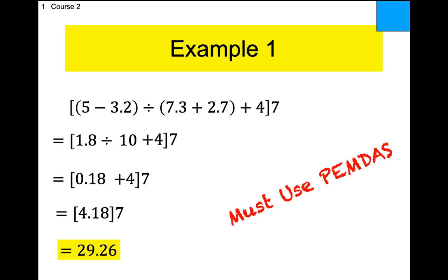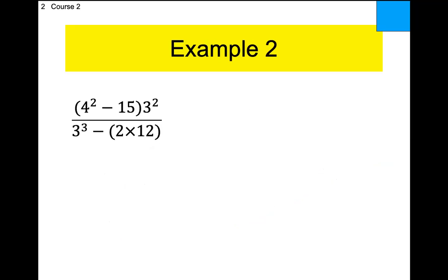Who's lost? It's just PEMDAS. All right, let's look at example two. What does this one involve? It has a fraction and exponents. Remember, the fraction bar acts as a grouping symbol like parentheses. That means I'm going to simplify the numerator and simplify the denominator — you could do either one first. Let's do the numerator first. Inside the parentheses, we have exponents, so we do the exponents first. Four squared is 16.